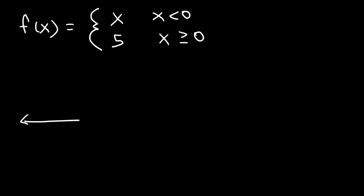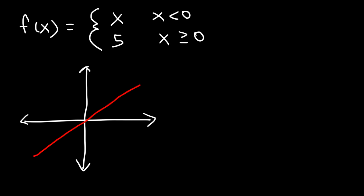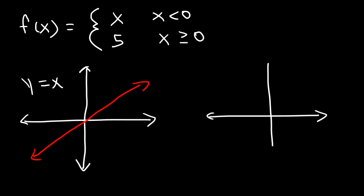Let's graph these two functions separately so we can get an idea of what they look like. The graph f of x equals x, or y equals x, is basically a straight line with a slope of 1, so it rises at a 45 degree angle. Now the second graph, f of x equals 5 or y equals 5, is a horizontal line at 5.